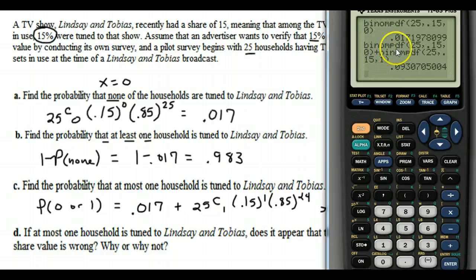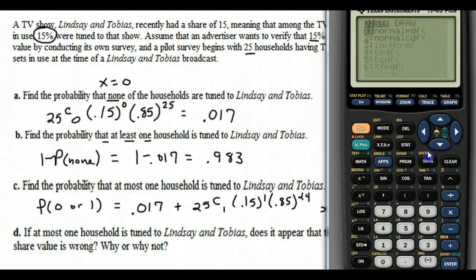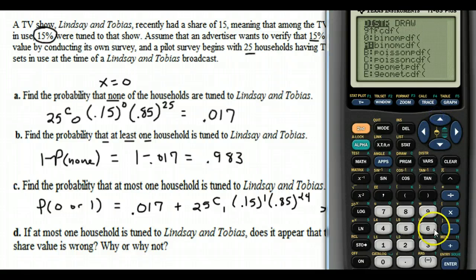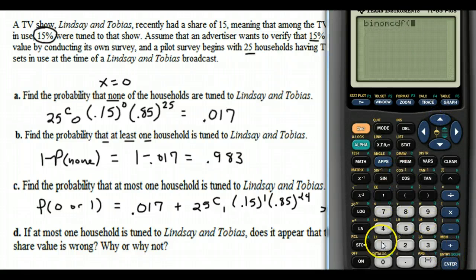But when it's 0 all the way up to a number, that's also the job of the binomial CDF. So if I go in here, binomial CDF, and I tell it N is 25, P is 0.15, and then X is 1, it adds up all the probabilities from 0 all the way up to where I tell it to stop.